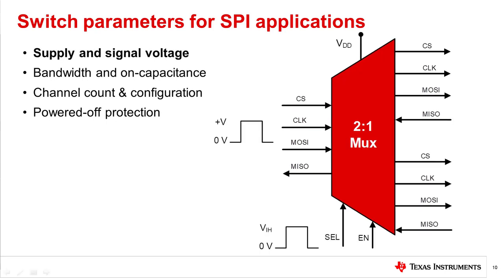The supply voltage, signal voltage, and continuous current through the switch must be in compliance with the absolute maximum ratings of the switch. Most switches and MUXs support input signals from rail to rail, and some switches even support input voltage beyond supply. Also, be sure that your control signal voltage is aligned with the VIH and VIL of the switch for proper operation.